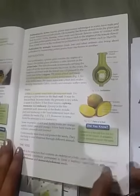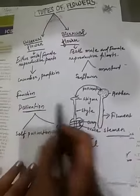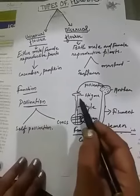The next topic is pollination. In standard 5 you have already studied about pollination. Pollination means transfer of pollen grains from anther to stigma.